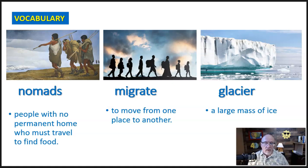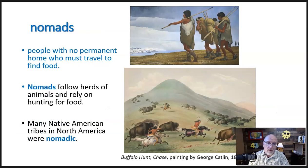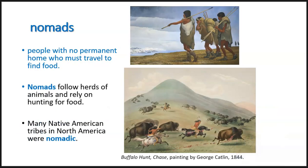All right, so let's move on and talk about each of these just a little bit more. The first word we have is nomads. These are people with no permanent home and they must travel to find food. Nomads will follow herds of animals and rely on hunting to find their food.